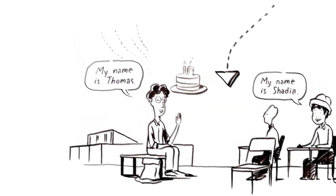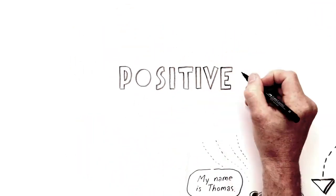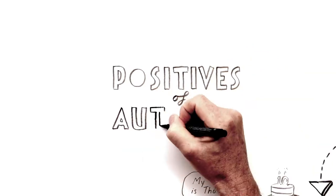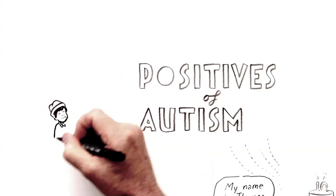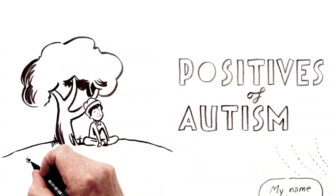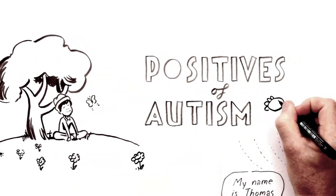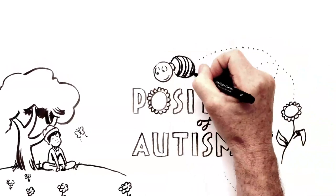Some of the positives I feel about having autism is seeing the beauty in small details. So we can pick up on things that other people might not and even just appreciate small things. Like sometimes I'd go out in nature and just notice a bee pollinating a flower and go, wow, that's amazing.